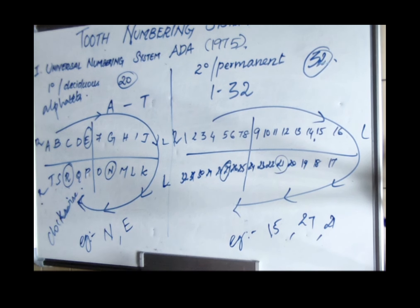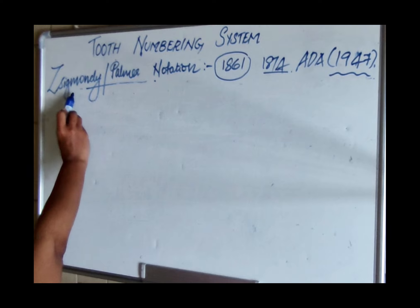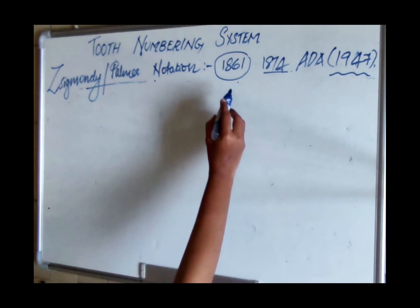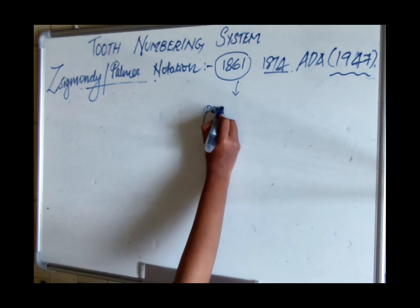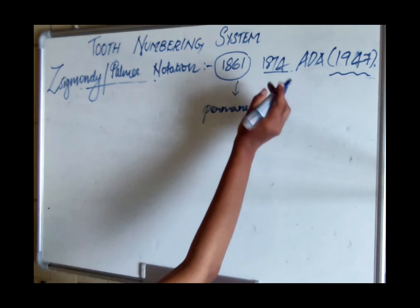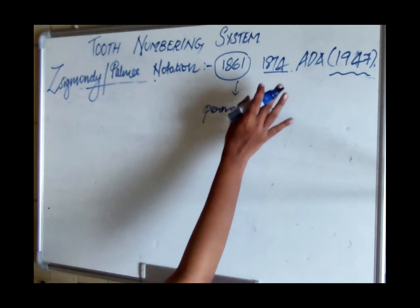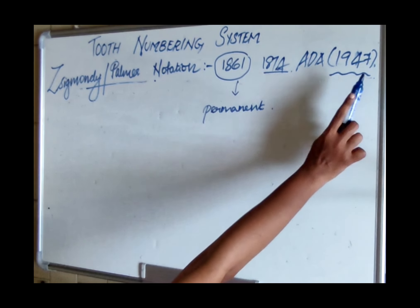The disadvantages of the Universal system are that it is very difficult to visualize graphically and requires more practice — it is hard to remember which number or alphabet refers to which tooth. Next, we look at the Sigmondi/Palmer notation, given by the Austrian dentist Sigmondi in 1861. It was initially given for permanent dentition and later adapted for primary dentition in 1874, then recommended by ADA in 1947.